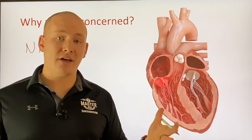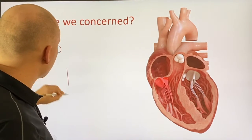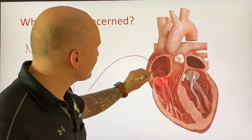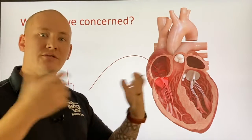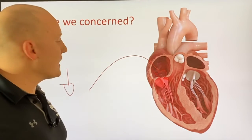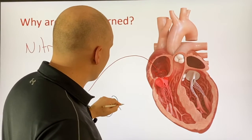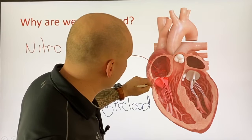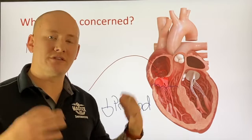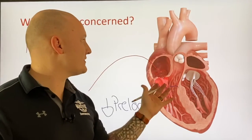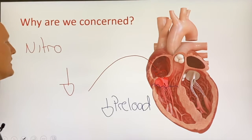When we decrease systemic vascular resistance and cause vasodilation, we cause a decrease in blood return back to the right ventricle. This ultimately decreases the preload — the amount of fluid in that ventricle prior to contraction — the amount of fluid ready to be pushed forward towards the lungs to get oxygenated, since this is deoxygenated blood.